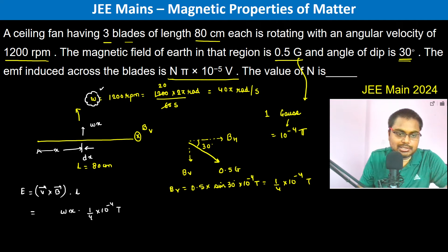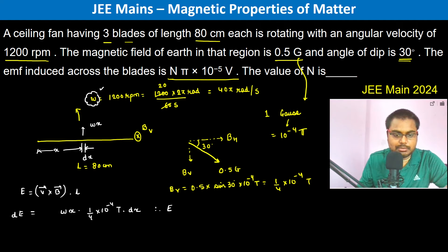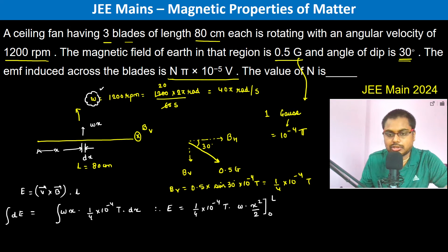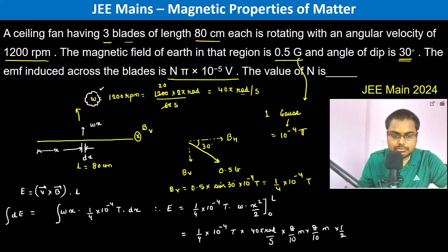Integrating over the full length of the blade, the total EMF is the integral of omega x dx from 0 to l, giving x squared over 2 evaluated from 0 to l. So the total EMF is 1/4 into 10 to the power minus 4 tesla, into omega (40 pi radians per second), into l squared over 2, where l is 0.8 meters, written as 8/10 meters.